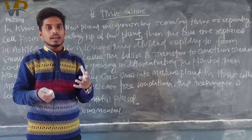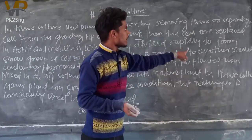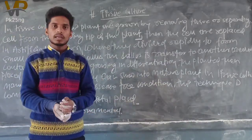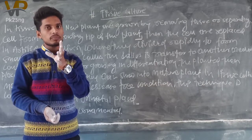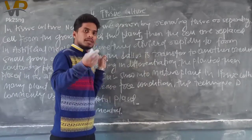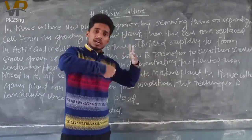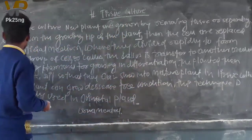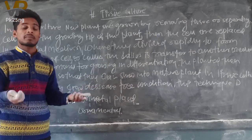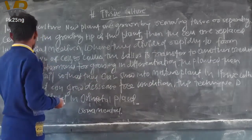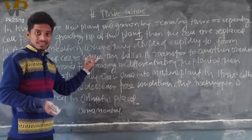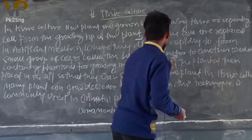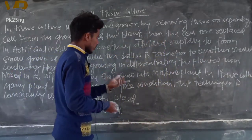In this artificial medium, the cells divide rapidly. They divide very quickly, starting from a small group of cells. This small group of cells is called tissue. This group of cells is also known as callous. The callous is then transferred to another medium containing hormones for growing and differentiation.